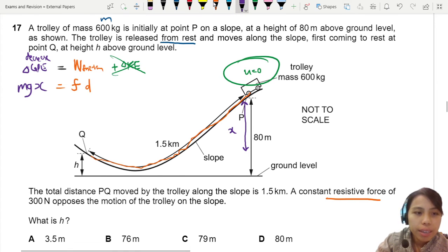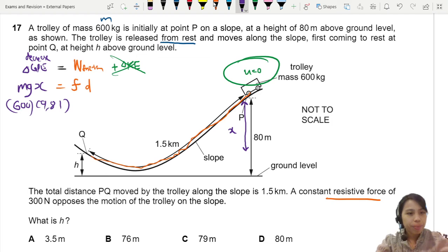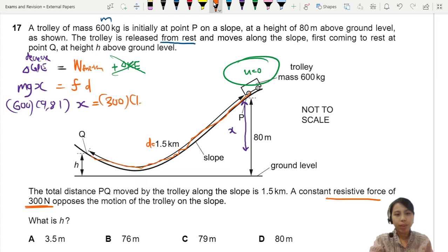Okay, let's substitute in everything we know: m is 600, g is 9.81, x we don't know. Frictional resistive force: 300. How far do you travel? 1.5 km - very, very long distance.